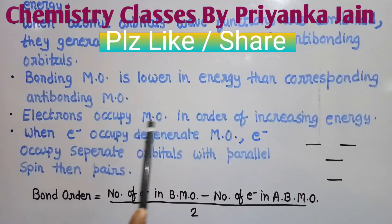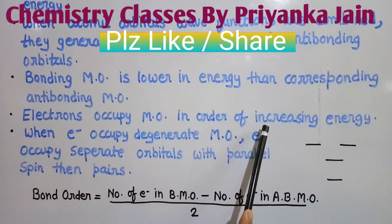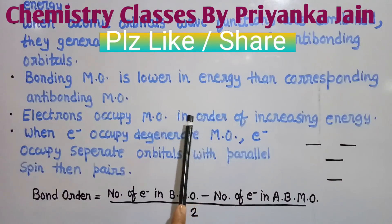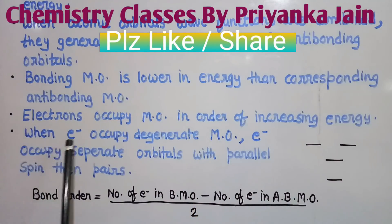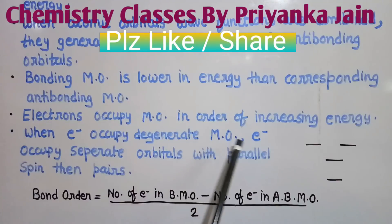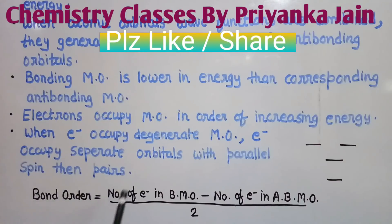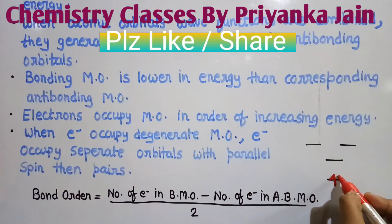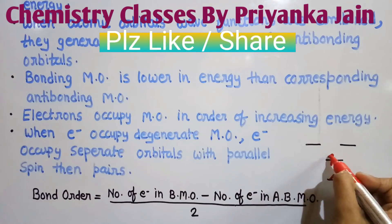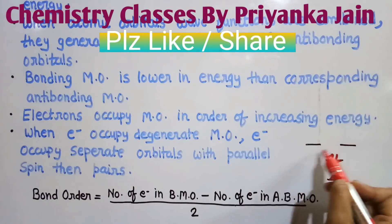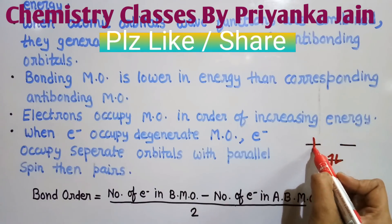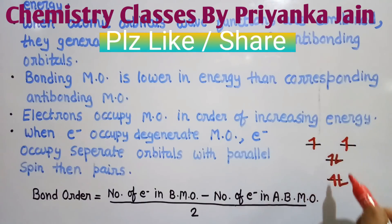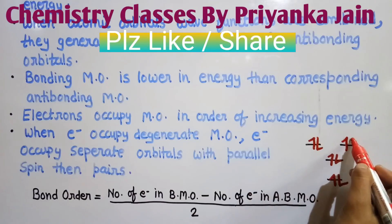Electrons occupy molecular orbitals in order of increasing energy. When electrons occupy degenerate molecular orbitals — orbitals of similar energy — they first occupy separate orbitals with parallel spins and then pair up. For example, electrons will first enter one orbital, then pair up, then go to the next orbital and pair up, and for degenerate orbitals, electrons enter with parallel spin before pairing.